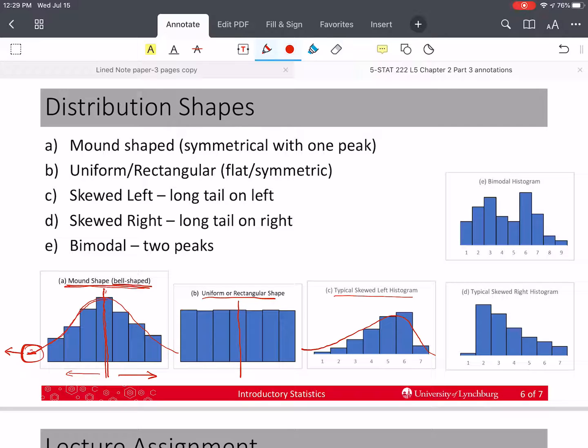So I've skewed it by making this left side no longer look like the bell shape or mound shape curve. I've skewed it to the left. So the long tail is on the left. The long tail of the distribution is on the left.